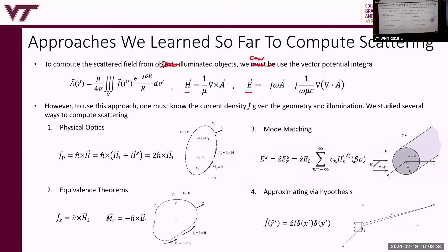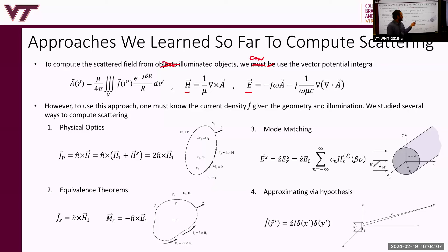We learned equivalence theorems: we can obtain currents — if we know fields in some region, we can calculate equivalent current densities J and M existing on some surface encapsulating the source region or separating it from another region of interest. Or we learned about mode matching: we expand the fields in two different regions in terms of wave functions appropriate for the boundary conditions and coordinate system, and apply boundary conditions to find the unknown coefficients. We did that last semester as well.